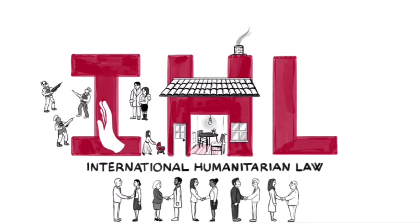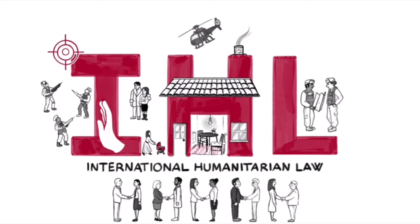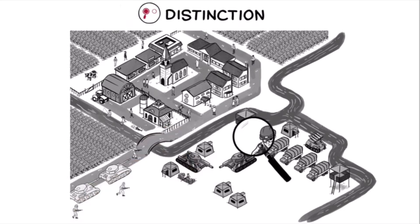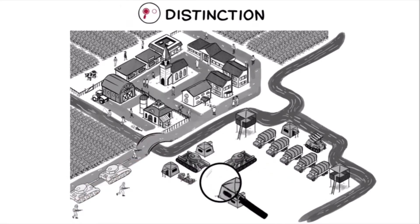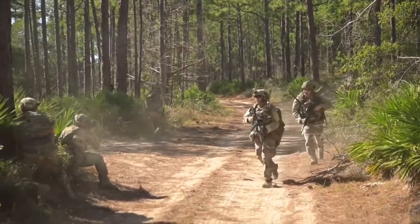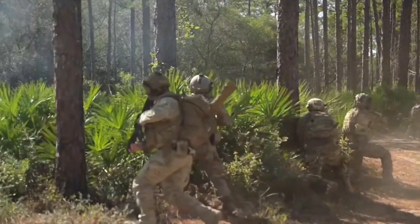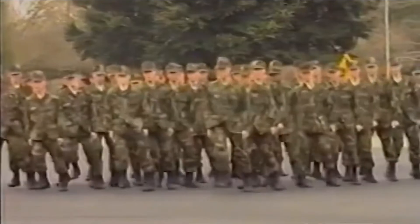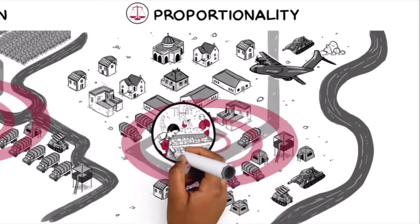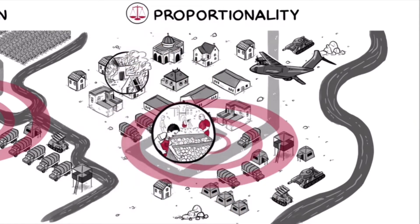There are some principles of international humanitarian law that we should know. We will mainly discuss the principles of distinction, military necessity, and proportionality, and whether they are applicable in the wizarding wars. The principle of distinction refers to distinguishing between civilians and combatants, and between civilian objects and military objects. The principle of military necessity permits measures that are actually necessary to accomplish a legitimate military purpose and are not otherwise prohibited by international humanitarian law. The principle of proportionality is closely related to military necessity, and prohibits attacks against military objectives that cause excessive damage relative to military operations.